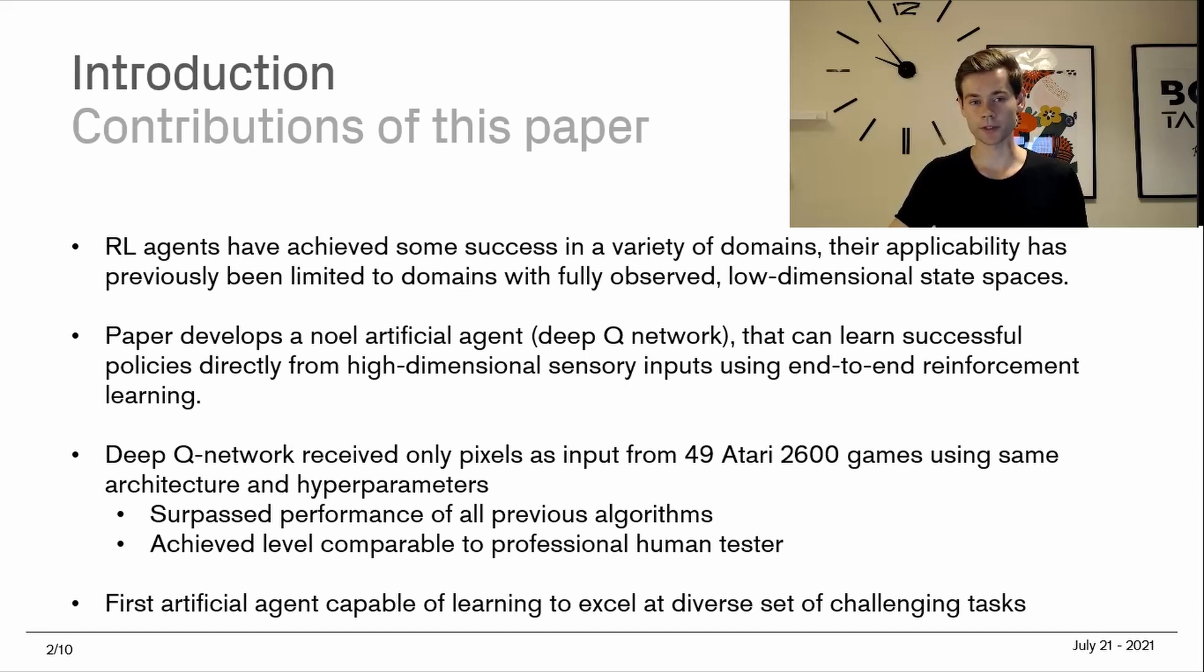This paper develops a novel artificial agent called a deep Q network, which can learn successful policies directly from high dimensional sensory inputs using end-to-end reinforcement learning. The key part is high dimensional sensory inputs. Historically, we've been able to apply this to low dimensional state spaces. This deep Q network does it also for higher dimensional state spaces and uses sensory input with end-to-end reinforcement learning.